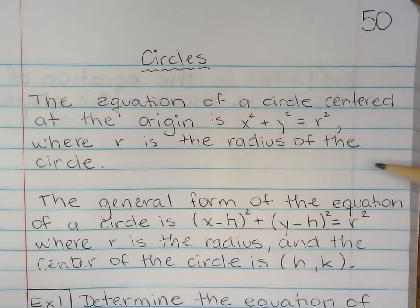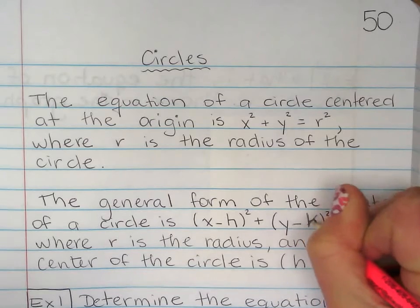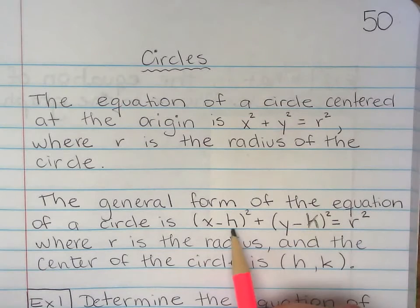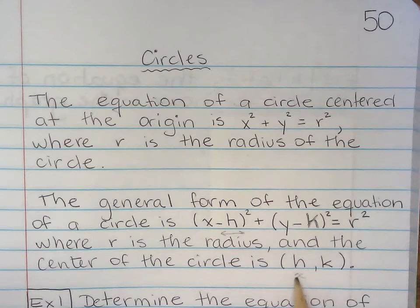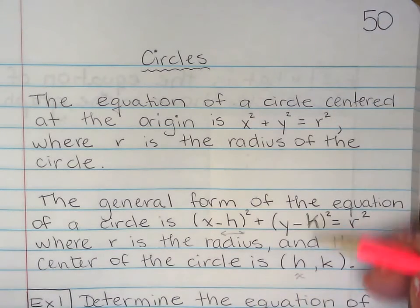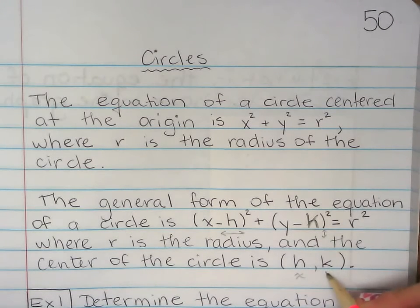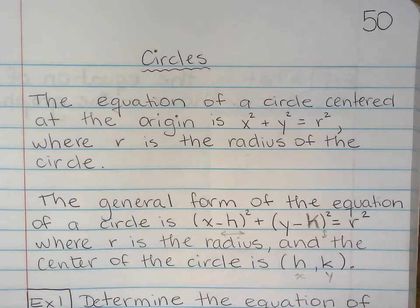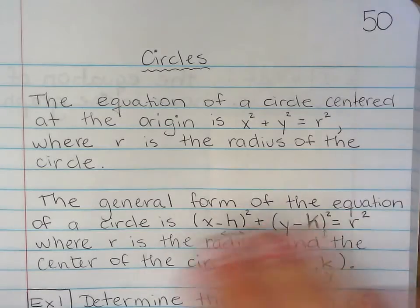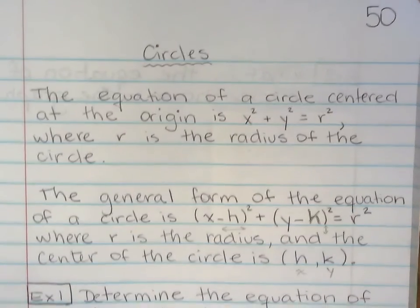And then the general form, when it's not at the origin, you're going to have the h, and it was supposed to be k right here. The h and k. h is going side to side, or h will be x, or go with the x. And k will tell you that the circle is moving up and down. That means it's going to go with the y. You know, think about the y-axis going up and down, and then the x goes side to side.